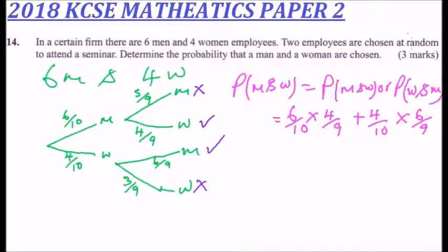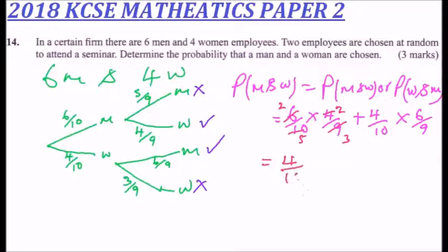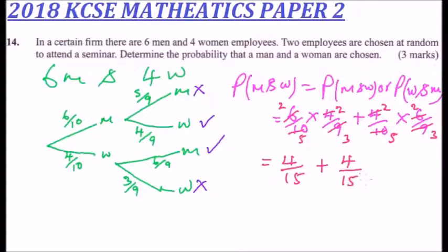Working these out, six over ten times four over nine simplifies to four over fifteen. Similarly, four over ten times six over nine also simplifies to four over fifteen. Adding these together with an LCM of 15 gives us four plus four, which is eight over fifteen.